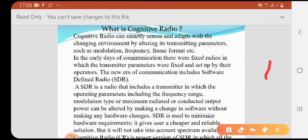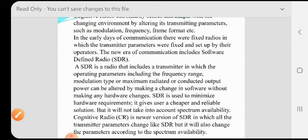SDR is used to minimize hardware requirements, it gives user a cheaper and reliable solution. But it will not take into account spectrum availability. Cognitive radio is newer version of software defined radio in which all the transmitter parameters change like SDR but it will also change the parameters according to the spectrum availability.